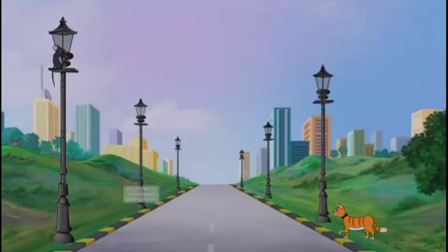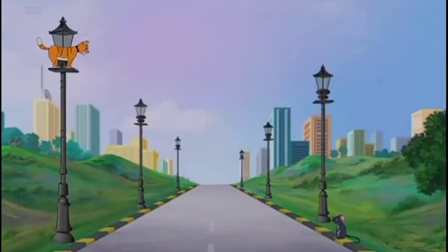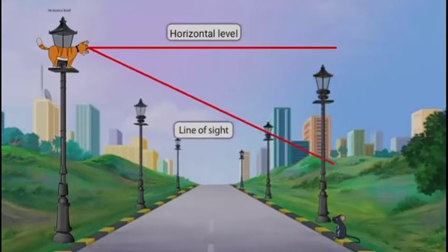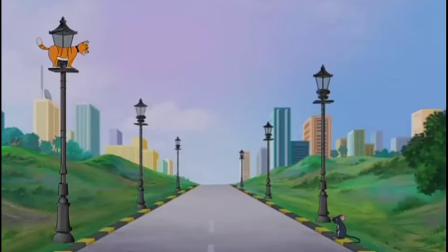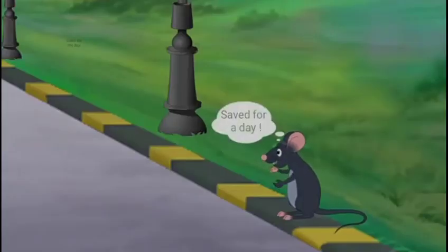Jimmy is very angry but won't give up. He runs toward the lamppost and starts climbing up. Just as Jimmy reaches the top, Timmy jumps down to the ground. So Jimmy is looking down angrily at Timmy. The angle formed by the line of sight with the horizontal level, when the object viewed is below the horizontal level, is known as the angle of depression. Jimmy decides to jump down to catch his prey, but he lands on the roof of a passing car!